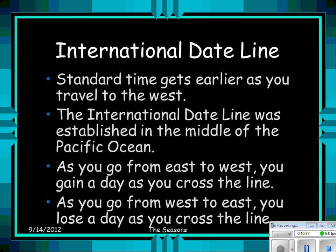The international dateline. Standard time gets earlier as you travel to the west. The international dateline was established in the middle of the Pacific Ocean. As you go from east to west, you gain a day as you cross the line. As you go from west to east, you lose a day — you actually lose all of Monday, for example, going from west to east.